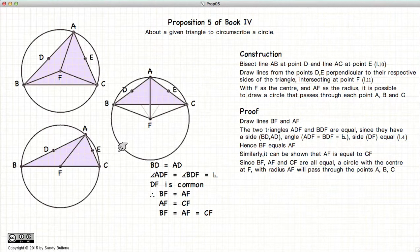And since they are all equal, we can draw a circle using any one of these equal lines as our radii, and it will pass through the endpoints. Again, our circle will pass through the endpoints because BF equals AF equals CF, which means they are all equal, which means they are all the radius of the same circle.